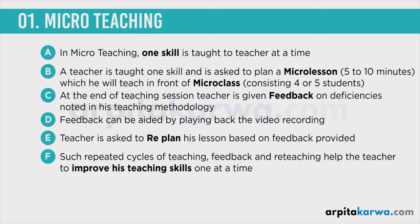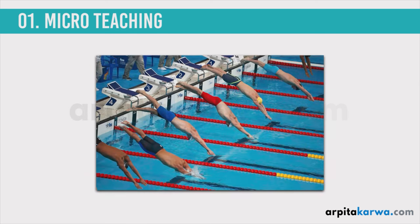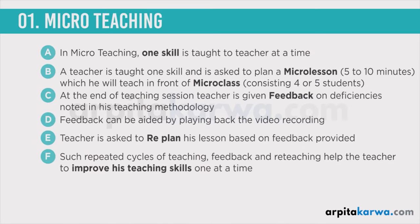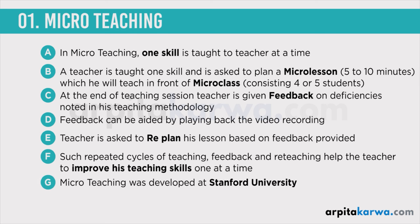Whereas when you become a pro and are good as a teacher, in classroom teaching you are asked to swim at the deeper end of the pool. At the initial level you are given short lessons and a small class which you can manage, and later when you master these skills you move to a direct classroom environment with large groups. Micro teaching was basically a product of research at Stanford University and was first adopted in 1961 by a person called Wright and some of his co-workers — these were the people who started micro teaching as a process.